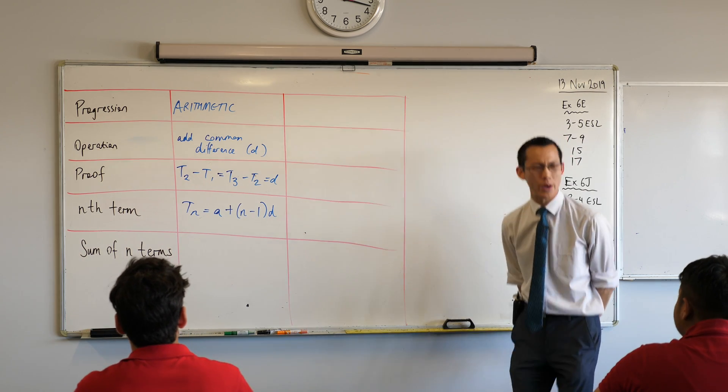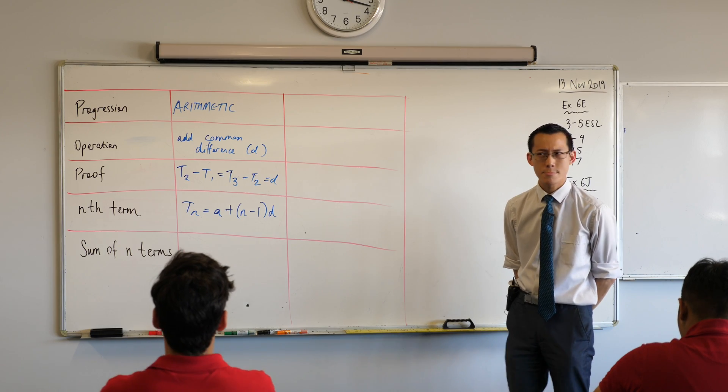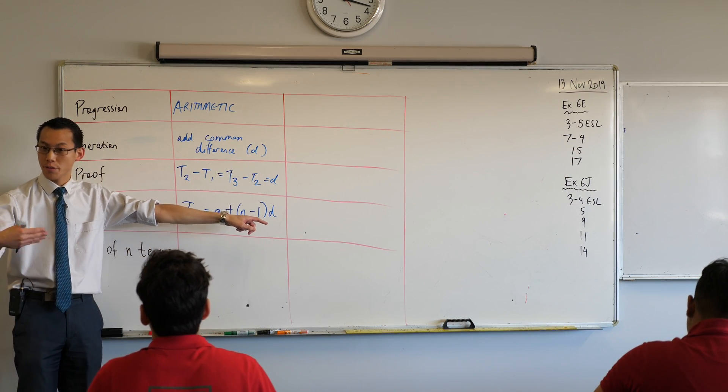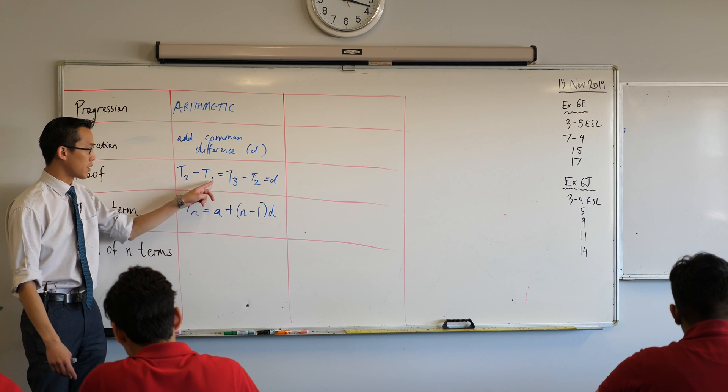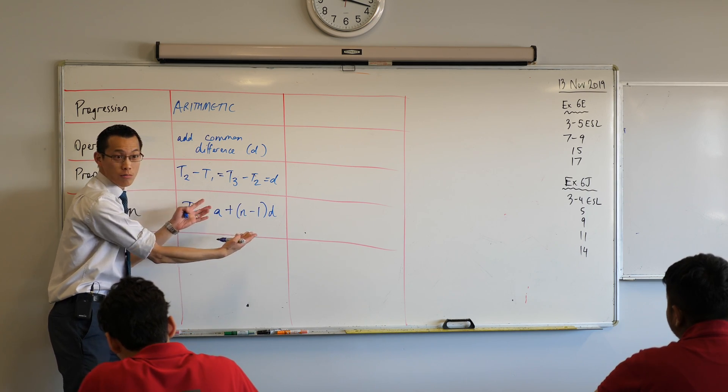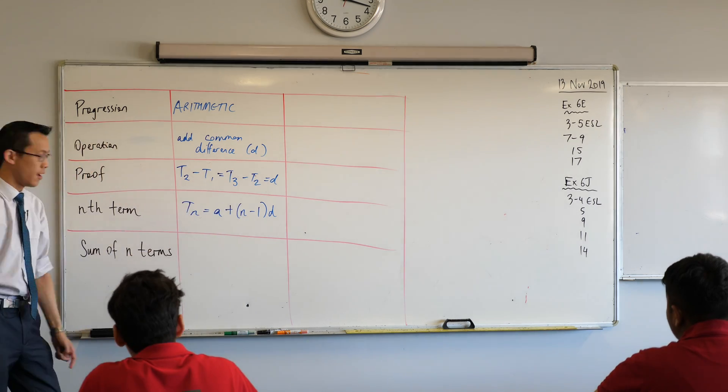Why was it N minus 1 by the way? I'm trying to remember why is it N minus 1? Removing the first term. Yeah, you don't add any lots of that common difference to the first term. If you want to think about it this way, what's T1? T1 is A plus 0. Term 1 is A, after all. Okay.